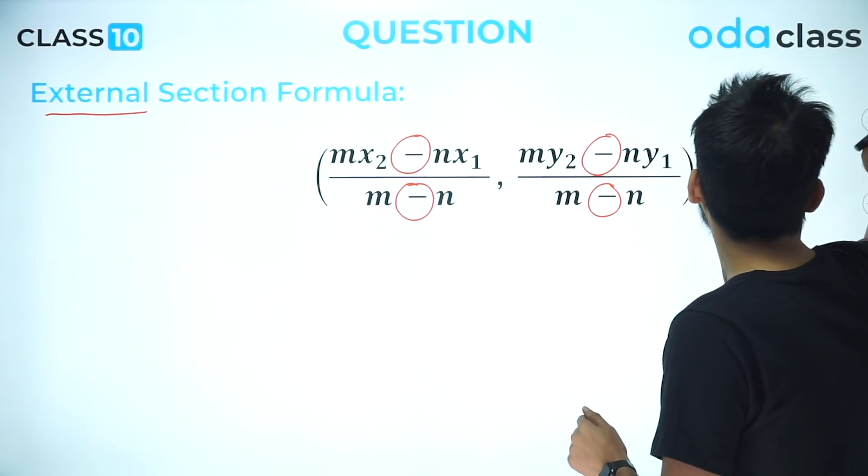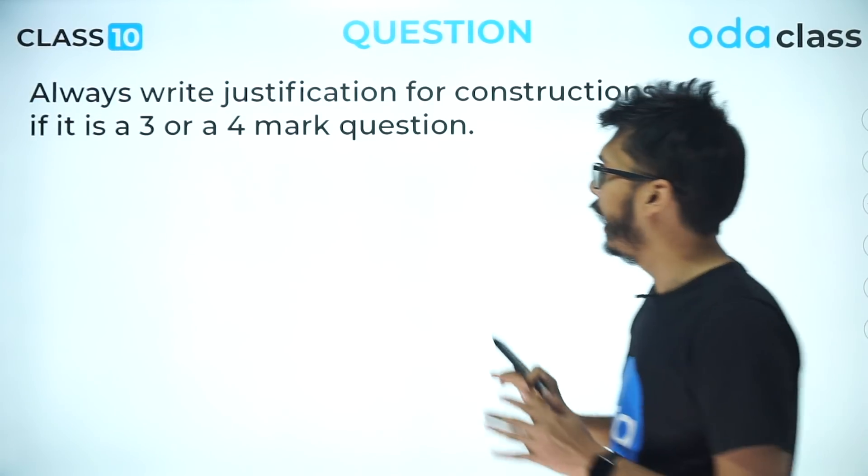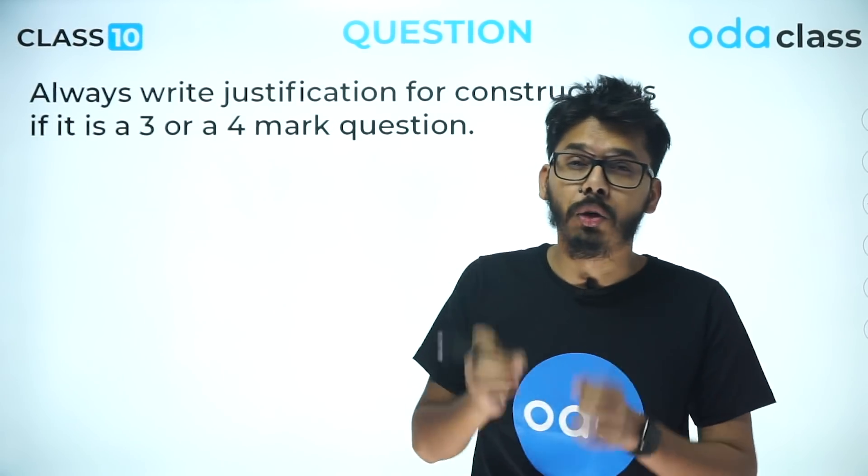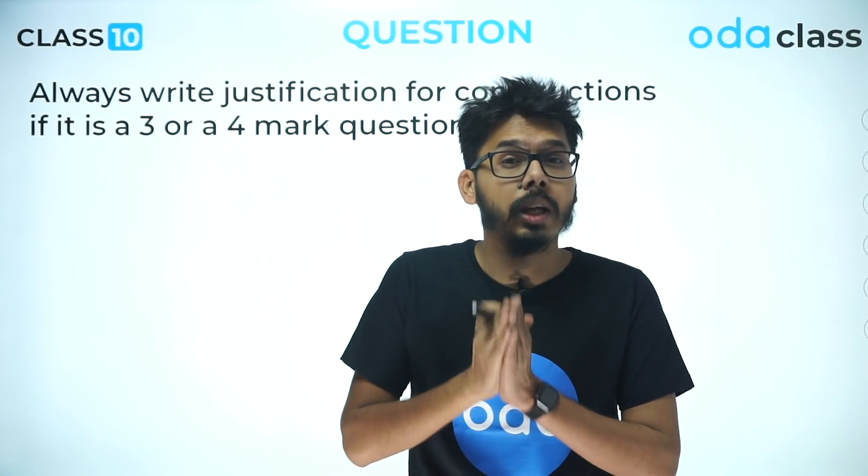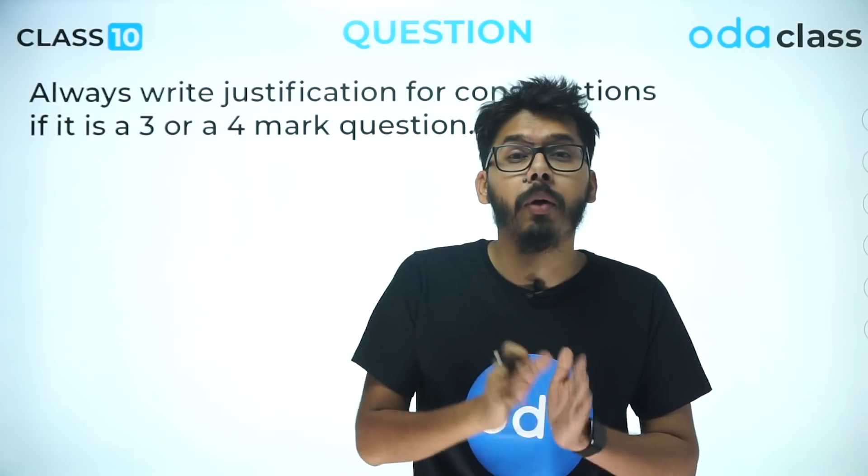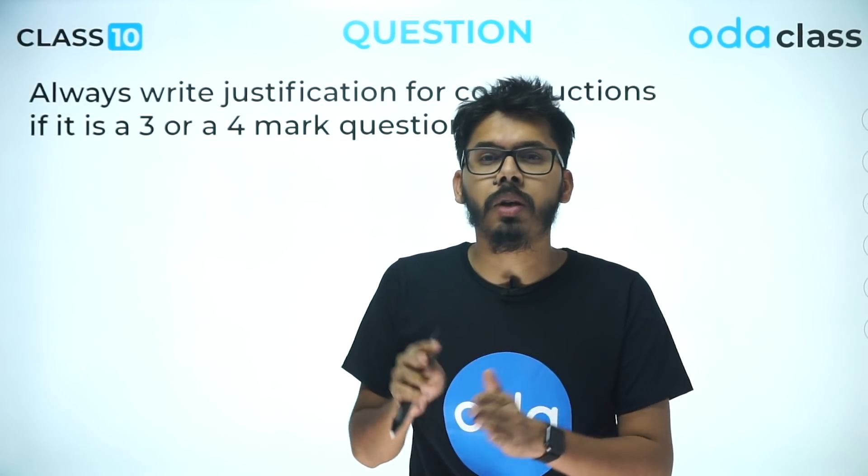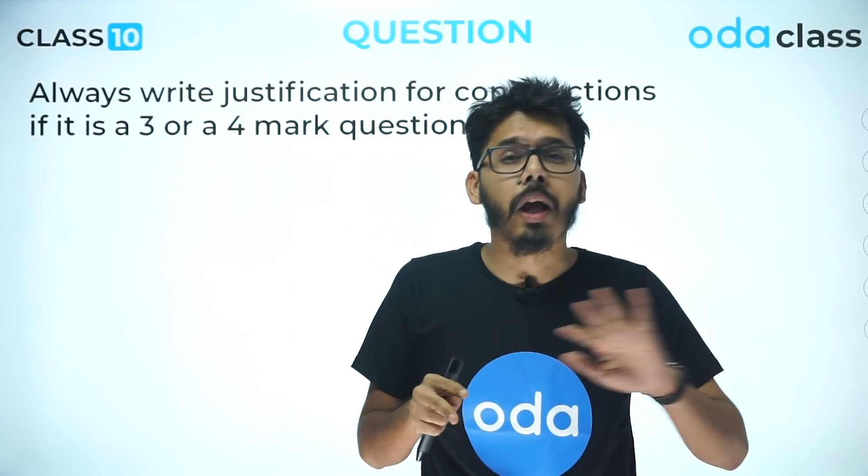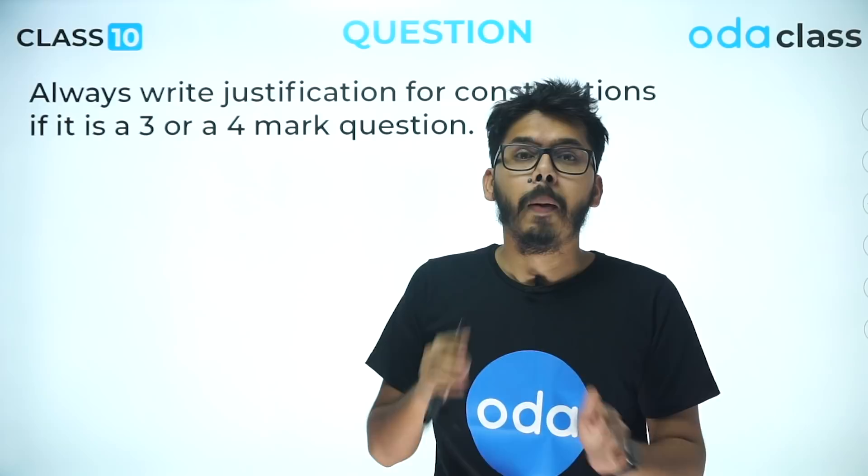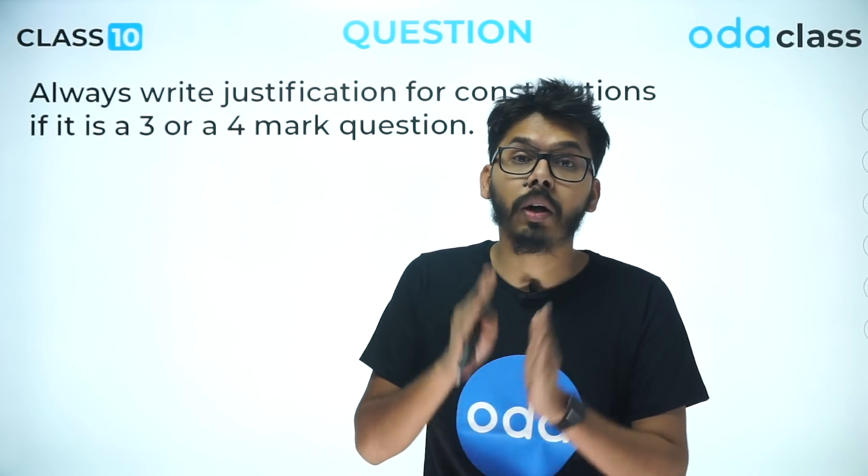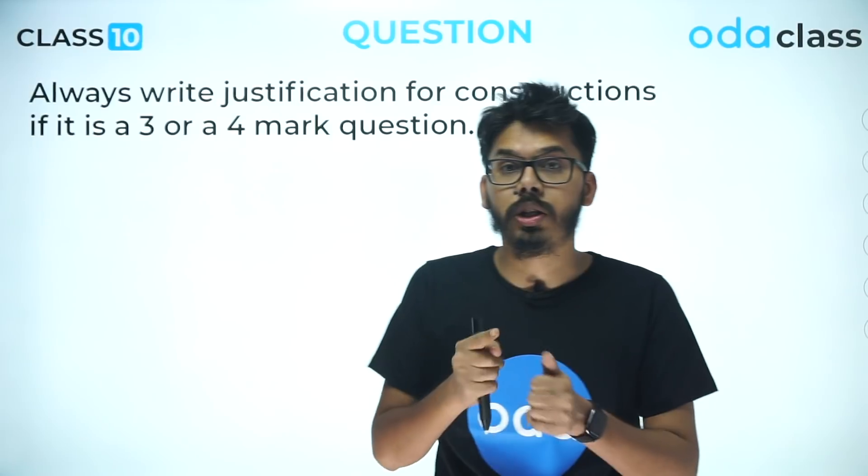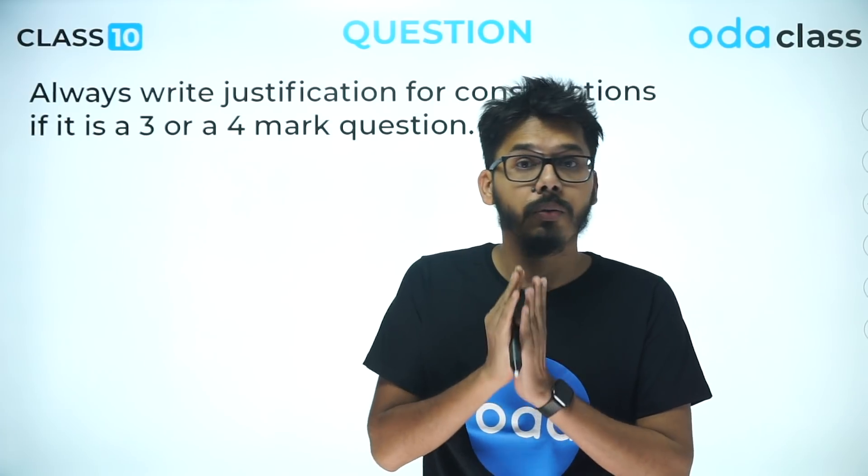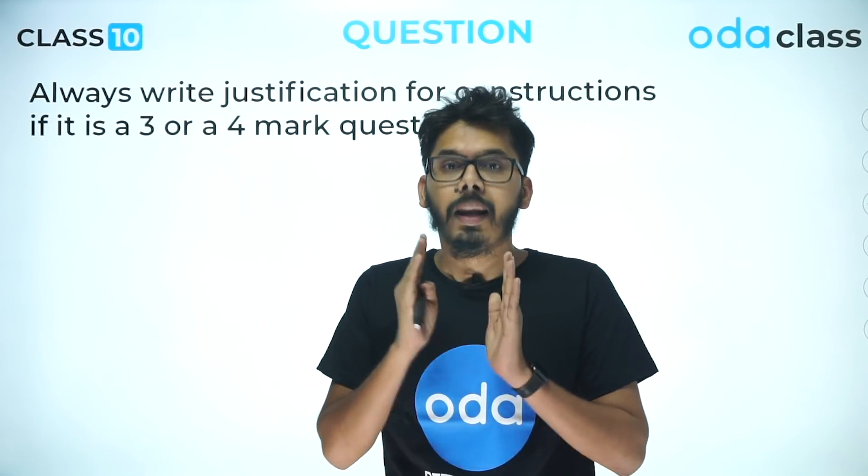The next point: A lot of students have asked me whether we should write justification steps in construction problems or not. So if a question comes from the construction chapter for one mark or two marks, you can avoid writing justification. But if it is a three-mark or four-mark question, make sure you're writing those justifications. Otherwise, from CBSE's side, you will lose one to two marks just because of your justification steps.